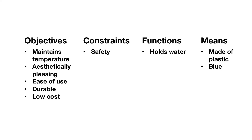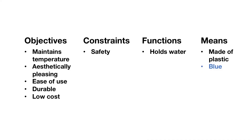At this point, we've successfully sorted all of our desired features into objectives, constraints, functions, and means. Let's review where we've placed all of these. We have our objectives, which we've identified as easy to use, durable, aesthetically pleasing, low cost, and maintains temperature. Safety has been identified as a constraint, holds water is a function, and we've placed made of plastic and blue in the means category. Sorting our list of desired features is just the first step in identifying how to move forward in designing our water bottle.